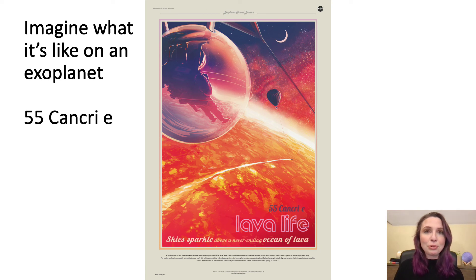Here's one example, 55 Cancri e. Now this planet orbits around its star really quickly. It goes all the way around its star in less than three days. That means that it's really close to its star, which means it's very hot. It is so hot that we can imagine this planet is entirely covered with lava.